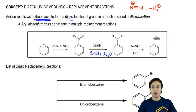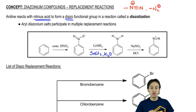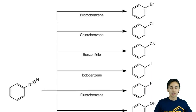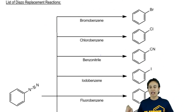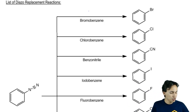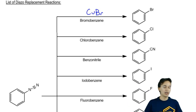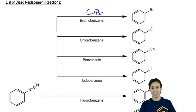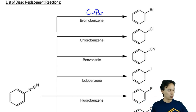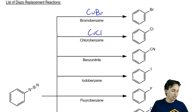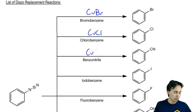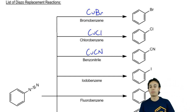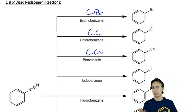What's so special about this? Once you get that diazo group, you can do a lot of things to replace it with another type of compound. If you react a diazo compound with CuBr, you get bromobenzene. If you react it with CuCl, you get chlorobenzene. If you react it with CuCN, you get what's called benzonitrile — a CN group attached to the benzene ring.